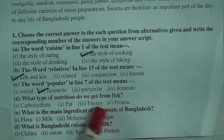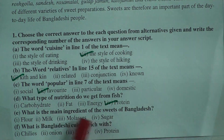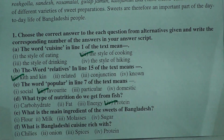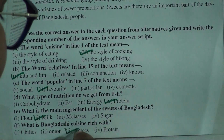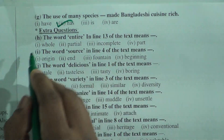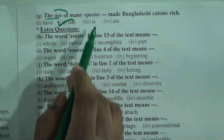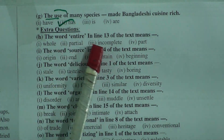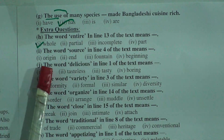What is the main ingredient of the sweets of Bangladesh? Milk is the main ingredient. What is Bangladeshi cuisine rich with? The answer is spices. The use of many spices — the subject is 'the use', so 'has' is used. The word 'entire' in line 13 means whole — entire means whole.